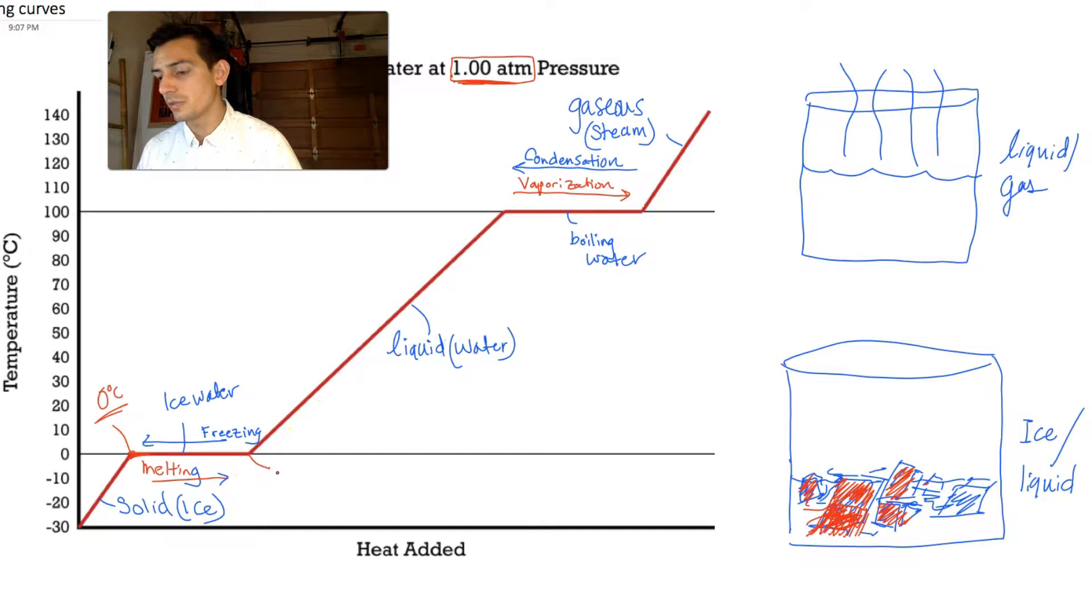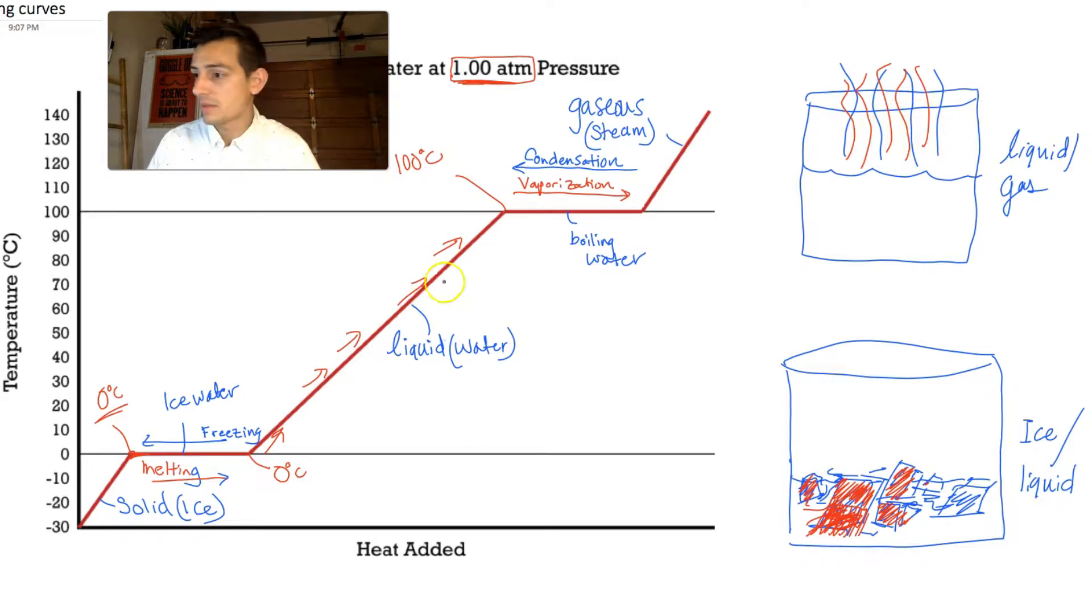So once you break all the bonds necessary, you're still at zero degrees, now you can start moving up. Okay, so we move up, and then once we get to our gaseous state, well that happens at 100 degrees, and you might say, 'Well, I saw it going into gas form. I saw the steam forming earlier on, maybe even at something like 80 degrees.'